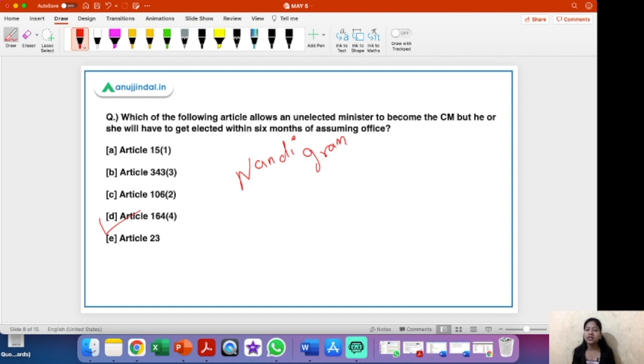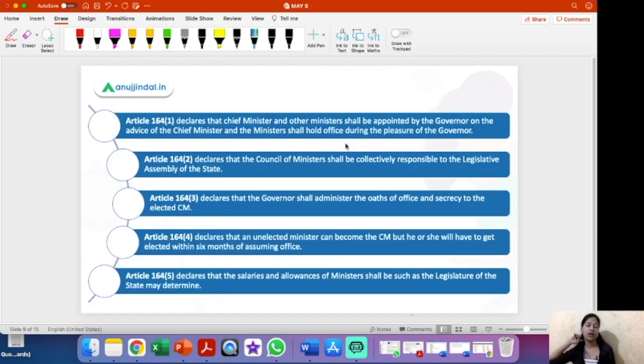Now let us discuss the other sub-clauses of Article 164 as well. So Article 164 sub-clause 1 declares that the chief minister and other ministers shall be appointed by the governor on the advice of chief minister and the ministers shall hold office during the pleasure of the governor. So basically this is a very simple sub-clause that is stating that the council of ministers will be chosen on the advice of chief minister and will be appointed by the governor.